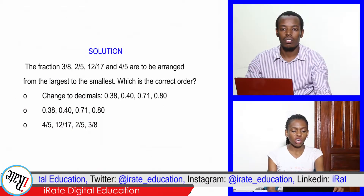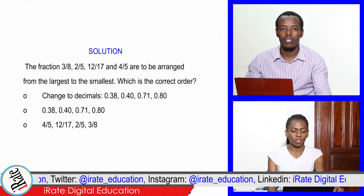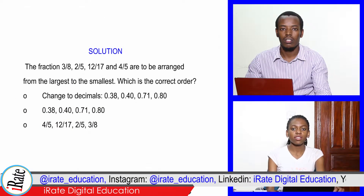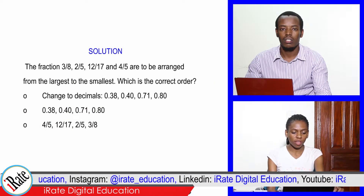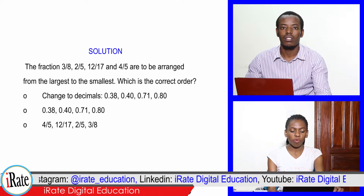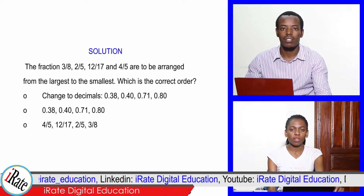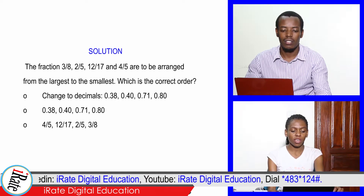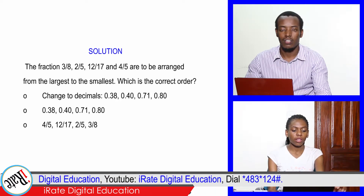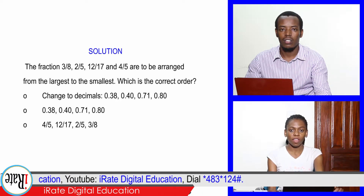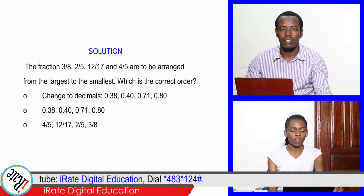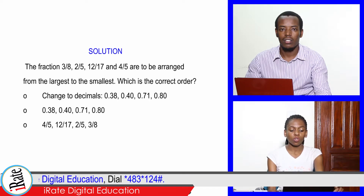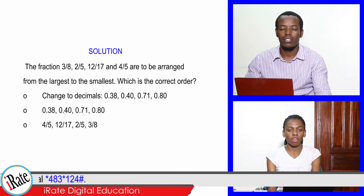Solution. Change to decimals: 3/8 = 0.38, 2/5 = 0.40, 12/17 = 0.71, 4/5 = 0.80. Arranged from largest to smallest, the correct order is: 4 over 5, 12 over 17, 2 over 5, then 3 over 8.